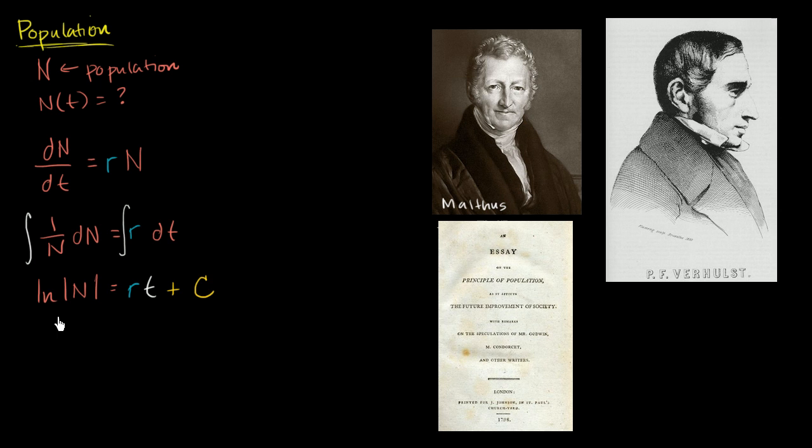And now if we actually want to solve for N, we could take, if this is equal to this, then E to this power should be the same as E to this power. Or another way of thinking about it, if the natural log of the absolute value of N is equal to this, is another way of saying that E to this is going to be equal to that. Let me just take E to this power and to that power. If that's equal to that, then E to that power should be the same as E to that power. And so we're going to be left with E to the natural log of the absolute value of N. That's going to give you the absolute value of N. Let's just assume N positive. Let's just assume population is greater than zero.